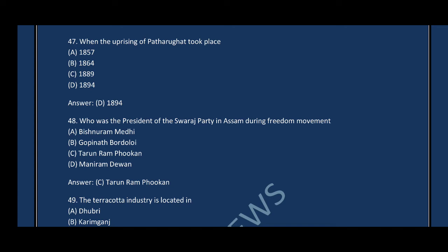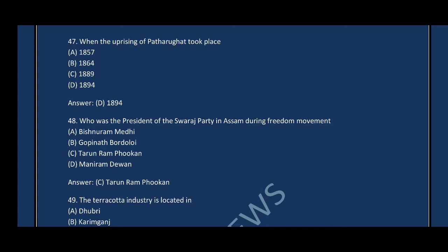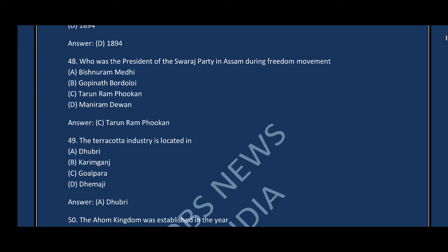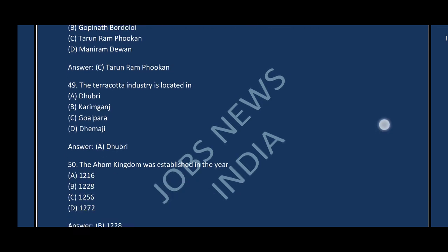Question number forty-eight: Who was the president of the Congress Party in Assam during the Freedom Movement? The correct answer is option C — Tarun Ram Phukan. Question number forty-nine: The Terracotta industry is located in — the correct answer is option A, Dhuburi.